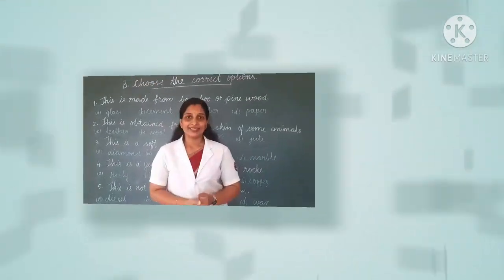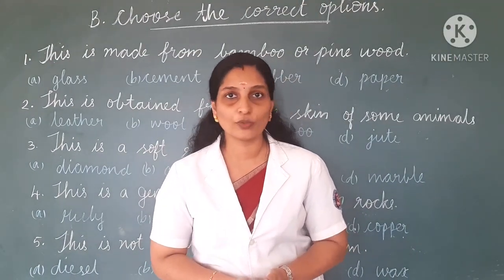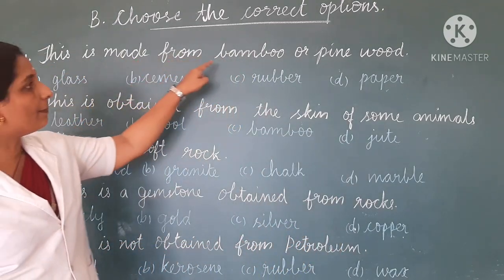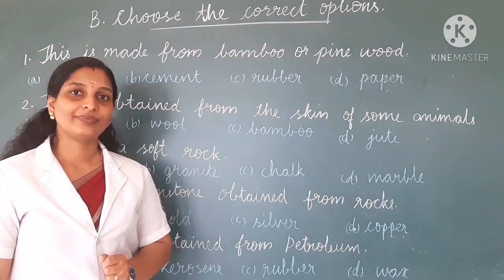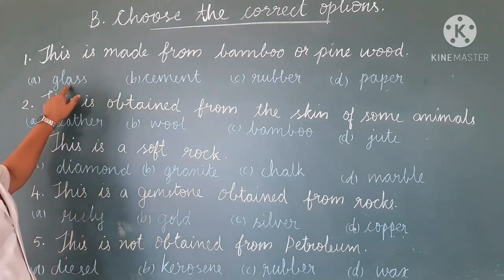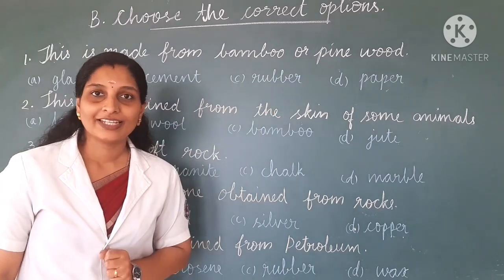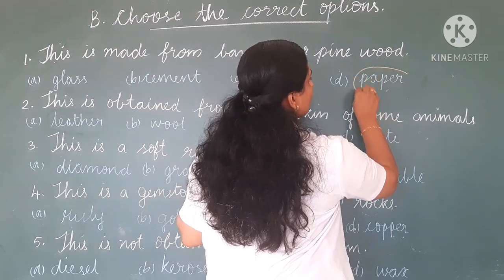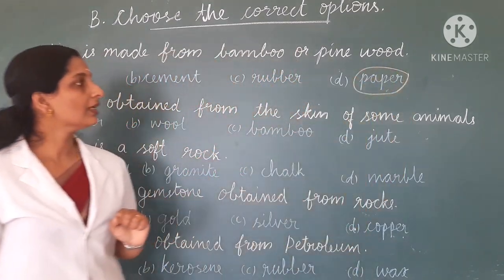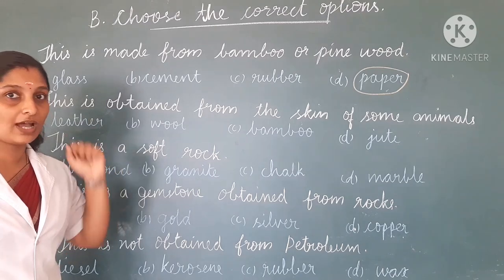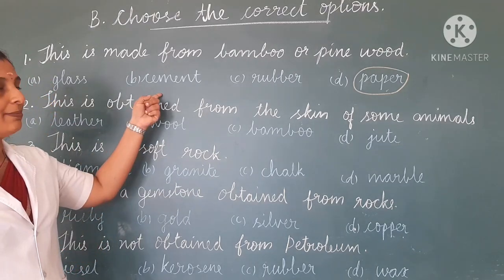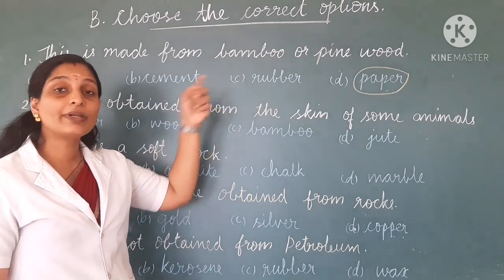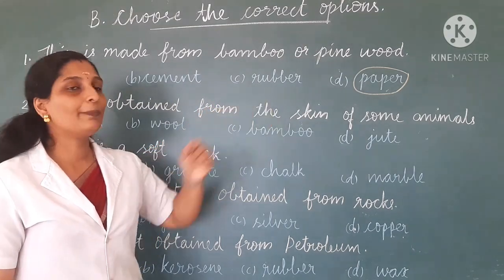Let's move to the next exercise. Children, your second exercise is choose the correct options. The first question: bamboo or wildwood is used to make blank. You have four options: glass, cement, rubber and paper. Which is the correct option? Yes — paper. What about glass? From where do we get glass? From soil. Then cement — from rocks like limestone. Then rubber — from the rubber plant. So paper is the correct option.